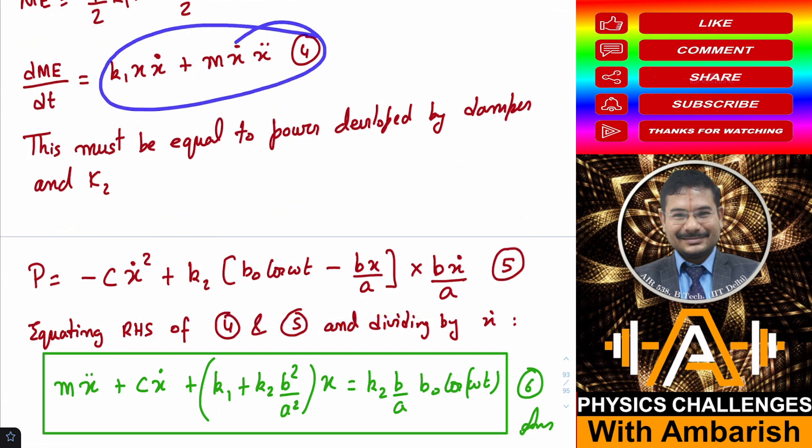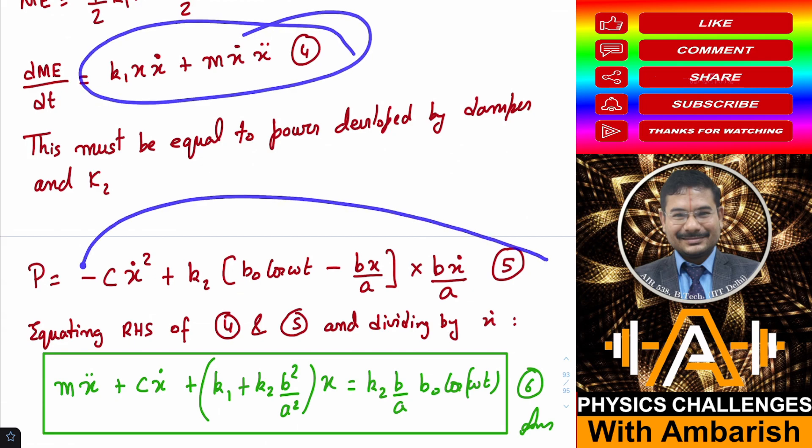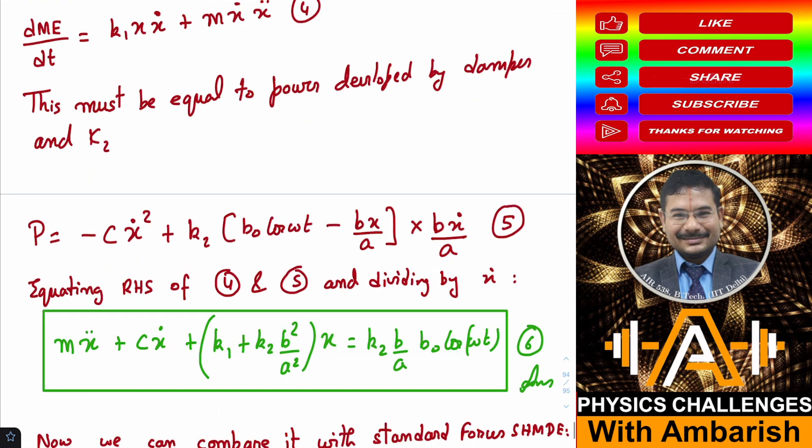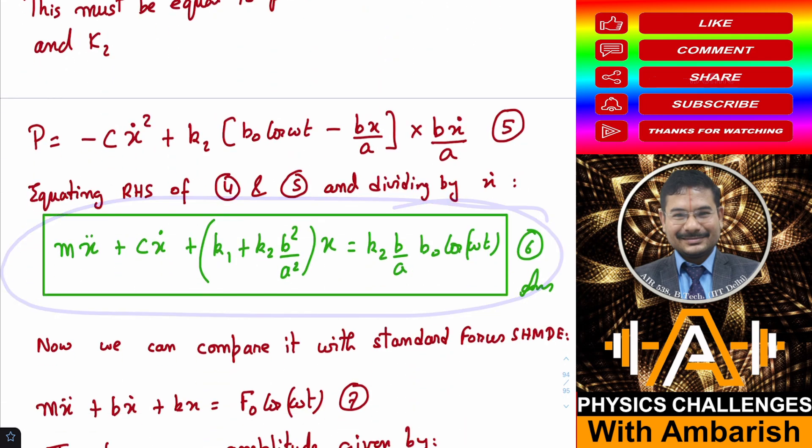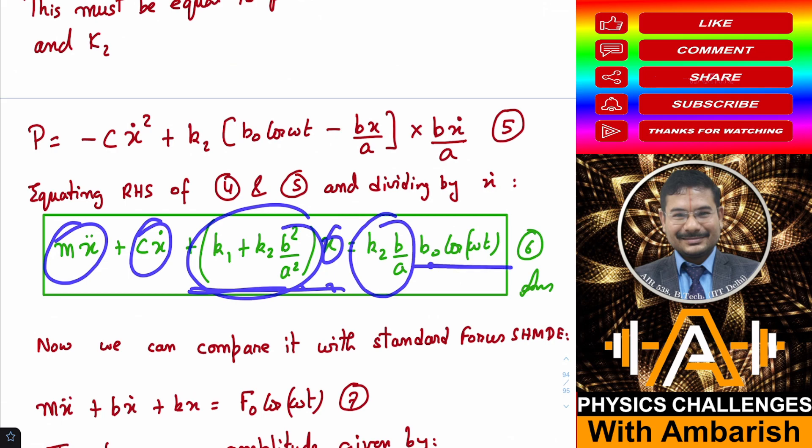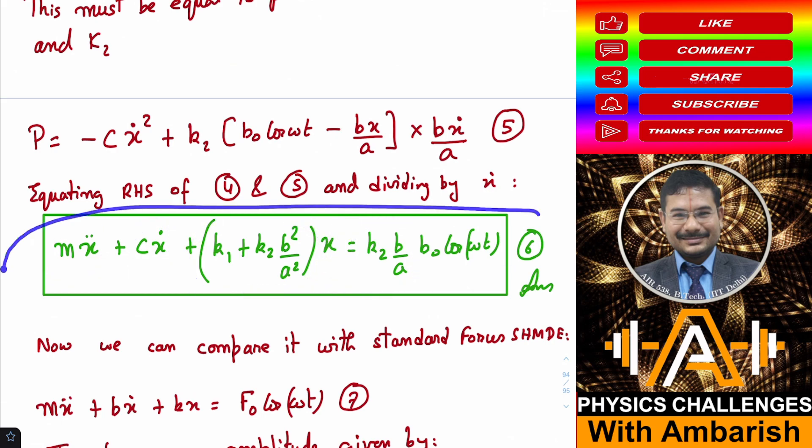I have rate of change of mechanical energy and I have power developed by the external forces, and the two must be equal by work energy theorem. RHS of equation four must be equal to RHS of equation five. I can cancel off an X dot because X dot is featuring in every term. You can cancel off X dot and rearrange, collect the terms. Collect the X double dot terms in one place, X dot terms in one place and X terms in one place, and take the rest to the right hand side to arrange in the standard form. This is our equation: M X double dot plus C X dot plus (K1 + K2 B²/A²) times X equals K2 B/A into B_0 cos omega t. This is our desired differential equation.